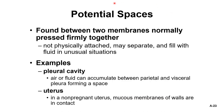Potential spaces are found between two membranes normally pressed firmly together. They're not physically attached and may separate and fill with fluid in unusual situations. For example, the pleural cavity can accumulate air or fluid between the parietal and visceral pleura, forming a larger space. The uterus is another example — in a non-pregnant uterus the mucosal walls are in contact, but in a pregnant uterus they are not.